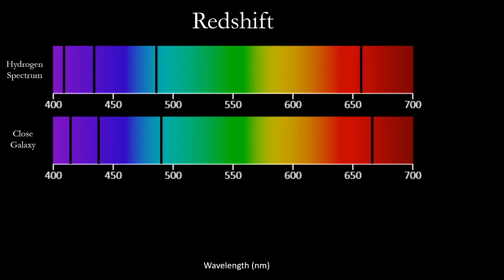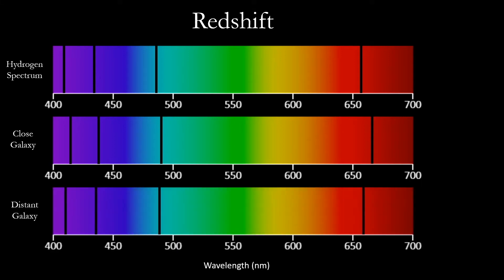You might wonder what the spectrum looks like for an even more distant galaxy. Will it be different from the close galaxy? These lines shifted a lot. What happened to the red line? It was shifted all the way into the near-infrared part of the spectrum.